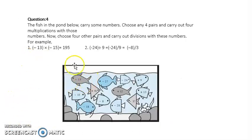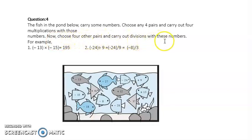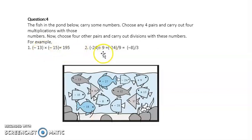Question number 4. There is a particular picture given. The fish in the pond below carry some numbers. Choose any 4 pairs and carry out 4 multiplications with those numbers. Then choose 4 other pairs and carry out division with these numbers. One example is given: minus 13 multiplied by minus 15 equals 195 — that is the multiplication example. And the division example: minus 24 divided by 9 gives minus 8 upon 3. Similarly, you can pick any numbers and write 4 multiplications and 4 divisions.